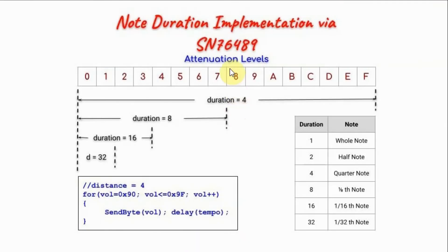Note duration can easily be implemented by using the 16 attenuation levels of the SN76489 chip. For example, to achieve duration 4 we can assign all 16 attenuation levels. For duration 8 we can assign 8 levels.